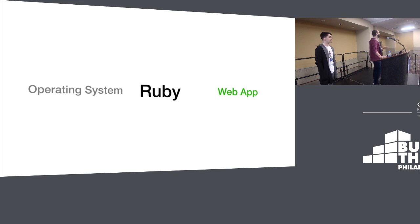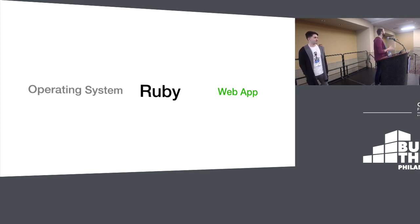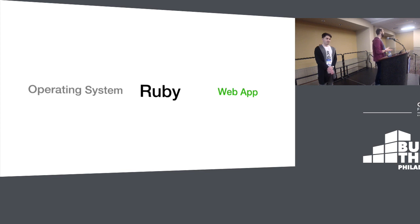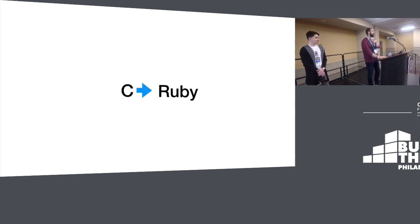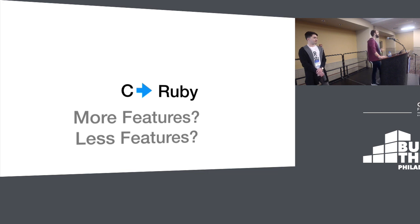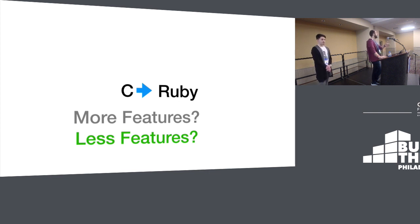The point is, it doesn't make C or Ruby better or worse. It's not Ruby's better than C or C's better than Ruby. They each have a sweet spot where they're good, where they're best for a particular use. You can build a web app with C, you can build an operating system with Ruby, but different things have different sweet spots. How do you go from C to Ruby - is it more features or less? If you add features to C, you get C++. You don't get Ruby.